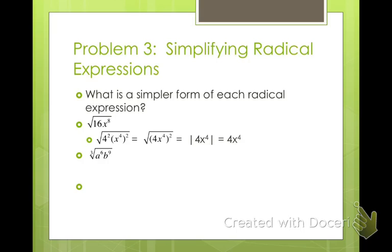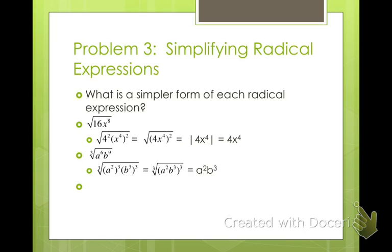The cubed root of a to the 6th, b to the 9th: a squared cubed makes a to the 6th, and b cubed cubed makes b to the 9th, so the answer is a squared times b cubed. We can have negative answers for cubed roots, so that doesn't need to be in absolute values.